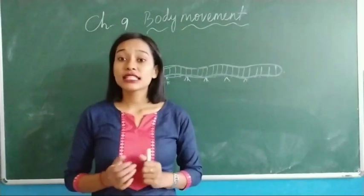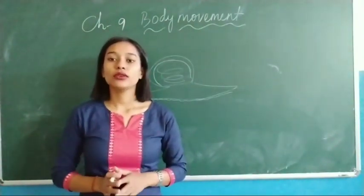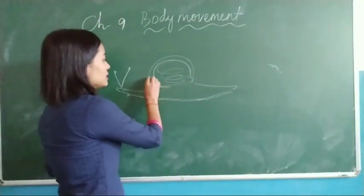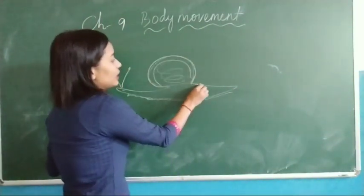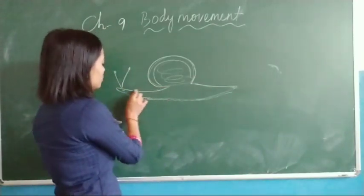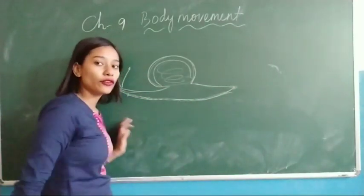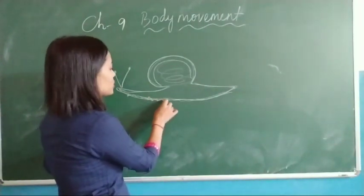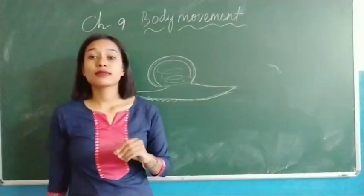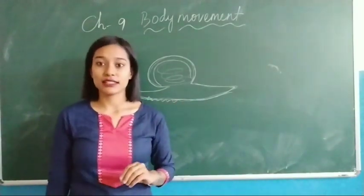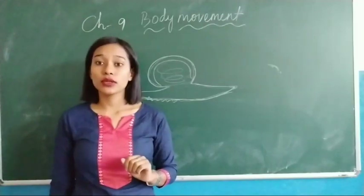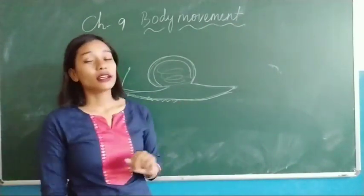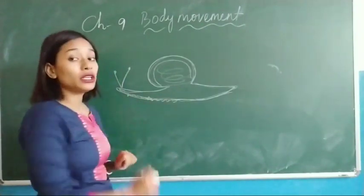The next one is movement in snakes. They have a protective layer over their body called a shell. And they have a muscular foot with the help of which they move from one place to another. The muscular foot secretes a slippery substance called mucus, which reduces friction between the body and the ground and helps the snake to move forward easily.